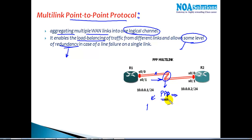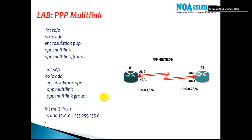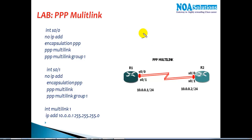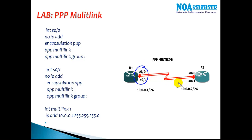If any one of the links fails, I still have an alternate route to communicate. It's not mandatory that both links have to be the same speed — the only condition is they must be running PPP with the multi-link feature. Now I'll go ahead and verify the configurations. I actually have two links connecting between Router 1 and Router 2.